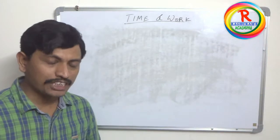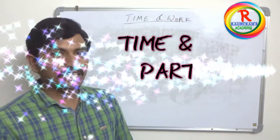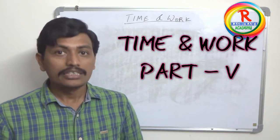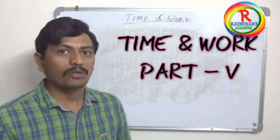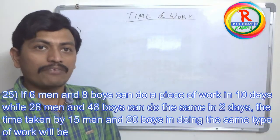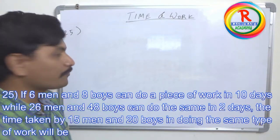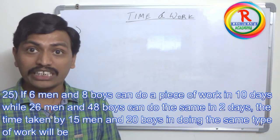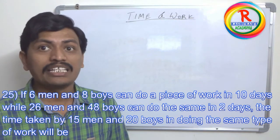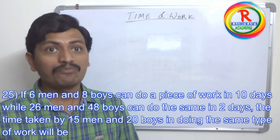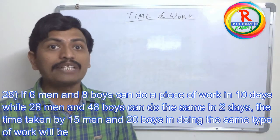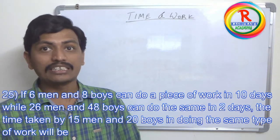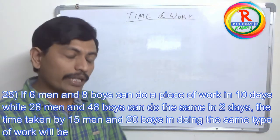Hi, this is Zeroguram, Active Trainer. Welcome back to time and work problems. In the previous video we have seen some problems. Let us see some more types of problems. Problem 25: If six men and eight boys can do a piece of work in ten days, while twenty-six men and forty-eight boys can do the same work in two days, the time taken by fifteen men and twenty boys in doing the same type of work will be?